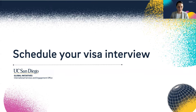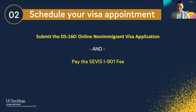All right, so let's dive into step two: how do you actually schedule your visa interview? Scheduling your visa appointment involves completing two things: one is to submit the official online non-immigrant visa application, also called the Form DS-160, and the second is to pay the SEVIS I-901 fee. We're going to talk about how you do both of these things.